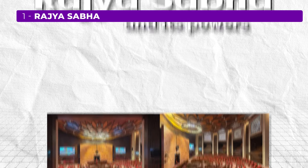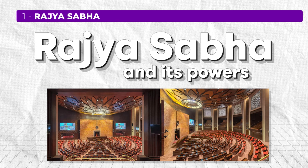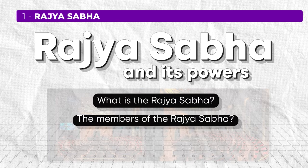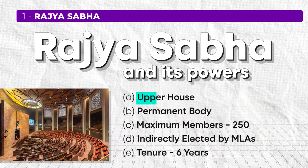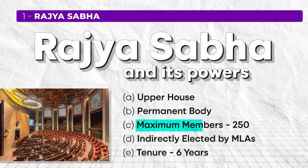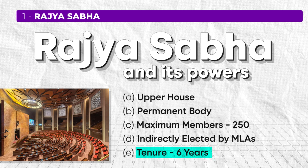The first important area you need to study for UGC Net Paper 1 is the Rajya Sabha and its powers. You should know what the Rajya Sabha is, the members of the Rajya Sabha, and the powers of its members. Rajya Sabha is known as the upper house of the parliament and it is a permanent body, meaning it cannot be dissolved unlike the Lok Sabha. The total number of members of Rajya Sabha is 250, and the tenure of each member is 6 years.